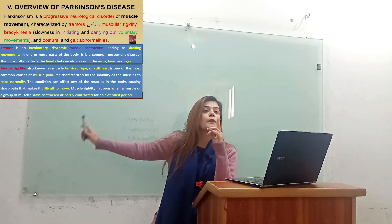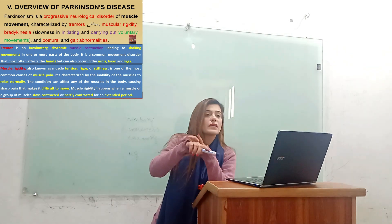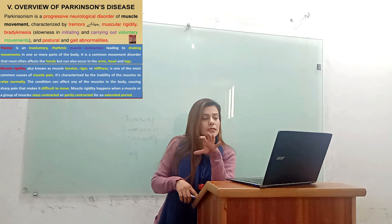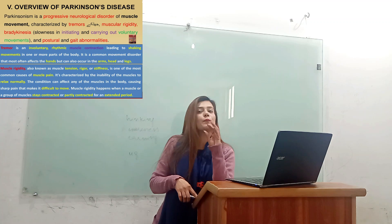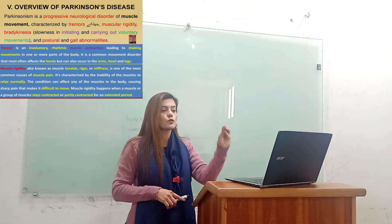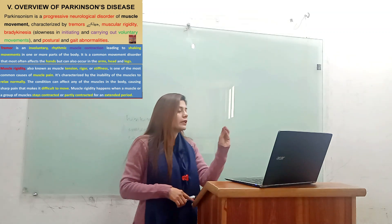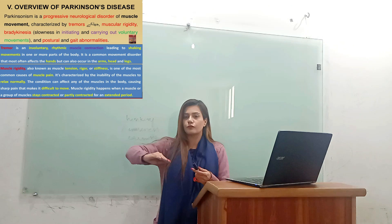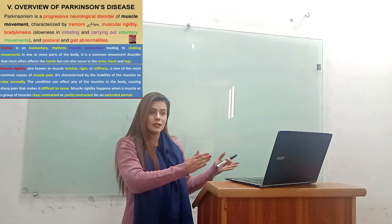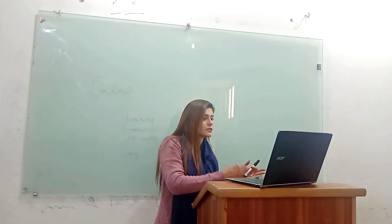Then you have muscular rigidity — the muscles are rigid, stiffness, constant contraction. Then you have bradykinesia. Bradykinesia is the slowness in initiating and carrying out voluntary movement. If I move my hand but I am slow or not able to do it, this is the disorder — the sign observed in Parkinson's disease.